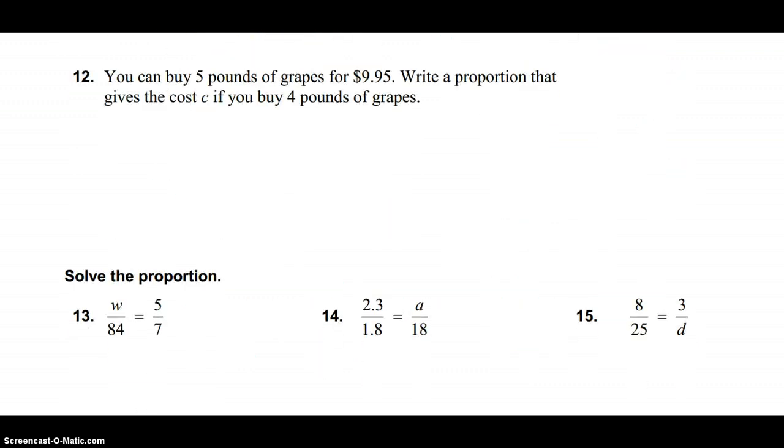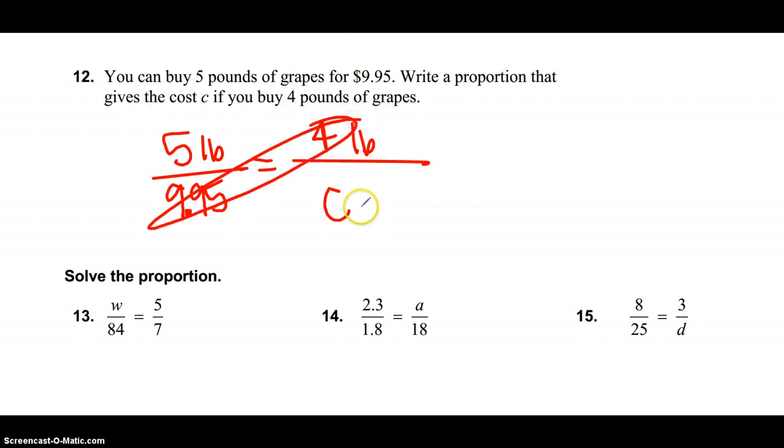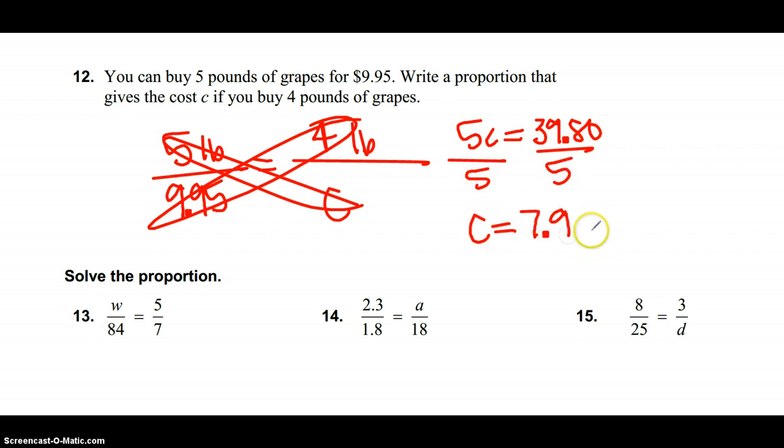Number 12. You can buy 5 pounds of grapes for $9.95, and it's asking you write a proportion that gives you the cost, C, when you buy 4 pounds of grapes. This is what I mean by write a proportion, two ratios equal to each other, and solve. So when you solve this, you use cross proportions and I get 5C is equal to 39.80. And if you divide both sides by 5, you get C is equal to $7.96.